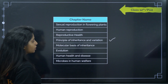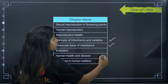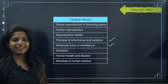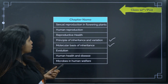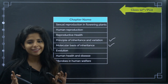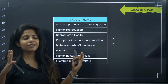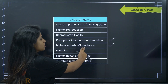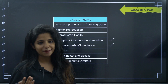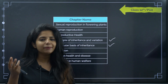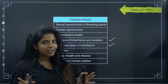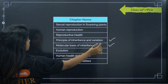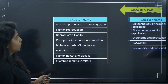Principles of inheritance and variation is something really new you're going to study, and molecular basis of inheritance is again something new you'll be studying in 12th grade. All the other things you might have studied somewhere in 10th, 9th, or 8th. These topics might be something really interesting for you in 12th grade.